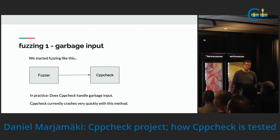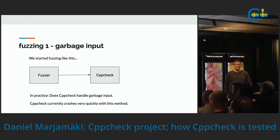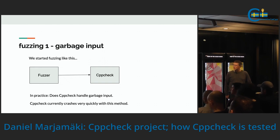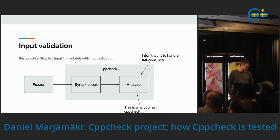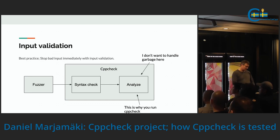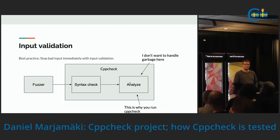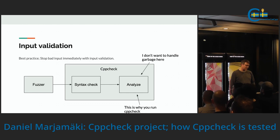I'll start with fuzzing. We started fuzzing like this: a fuzzer generates various garbage and we input that as code to CppCheck, and then CppCheck will crash in some seconds or so. It does crash quite easily with this approach — we don't handle garbage input very well. In theory, we should have input validation in CppCheck so that the fuzzer generates garbage input and then a syntax check will block that, so the analyze part doesn't have to deal with the garbage.